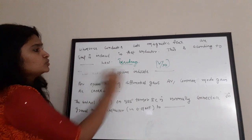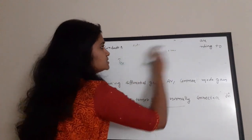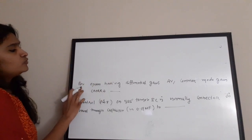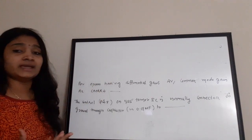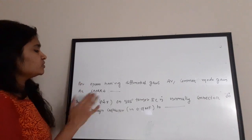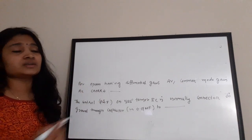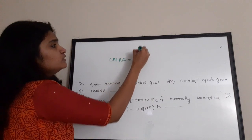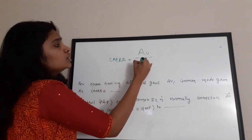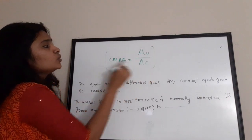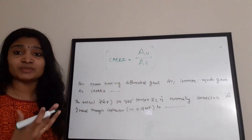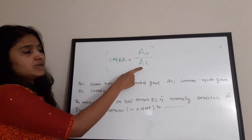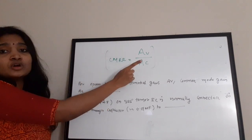For an op-amp having differential gain Av and common mode gain Ac, CMRR (Common Mode Rejection Ratio) is equal to differential mode gain divided by common mode gain — CMRR = Av / Ac. It represents the ability of the op-amp to reject common mode signals.